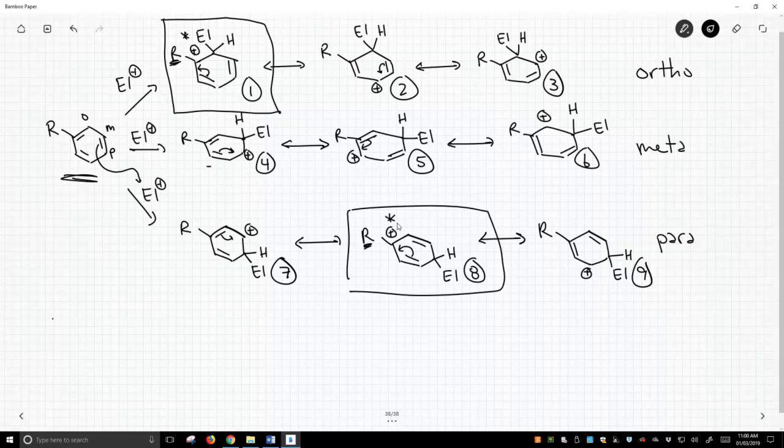Now you can see if the R group is an electron donating group, we're going to stabilize structures one and eight. Structures one and eight are on the pathway to the ortho and para products, so they are going to favor the ortho and para products.